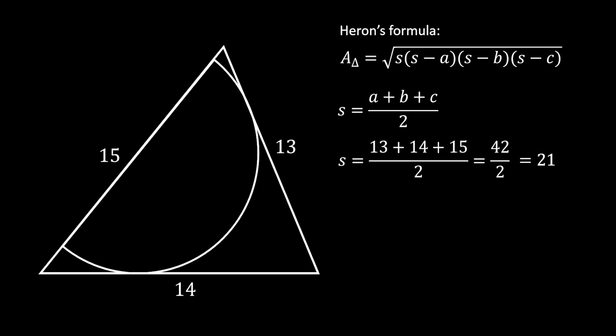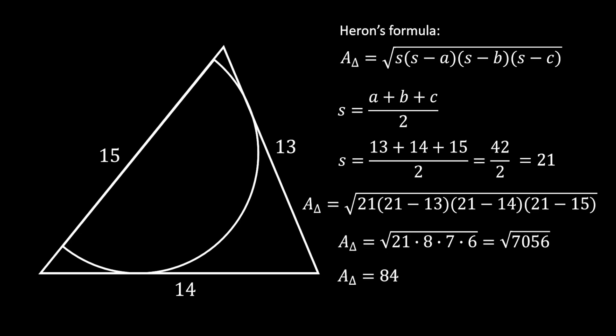Now, we can substitute this value in our Heron's formula along with all sides of the triangle and we will get the following. Here, we can simplify and we will get that that area is equal to square root of 7056, which means that the area of our triangle is equal to 84 square units.